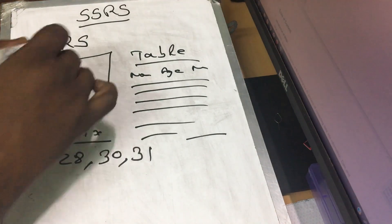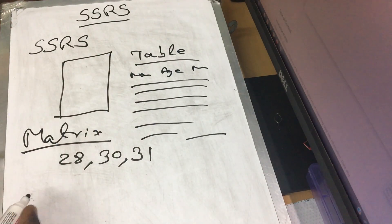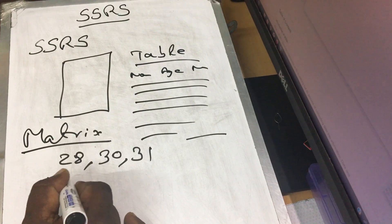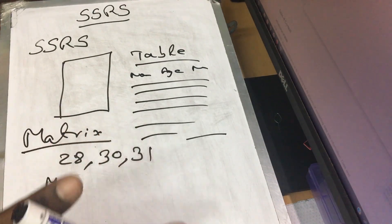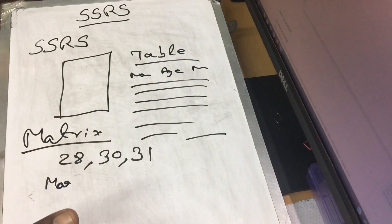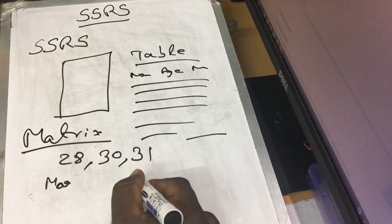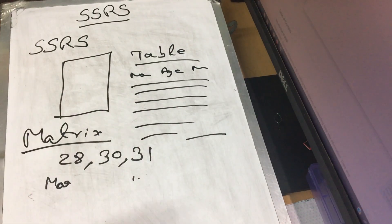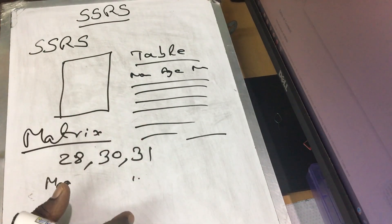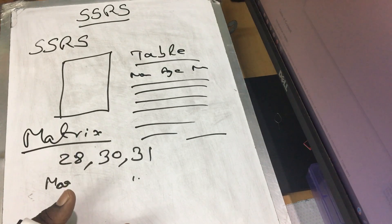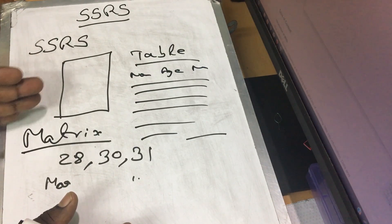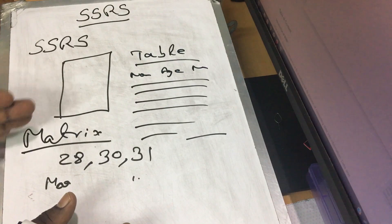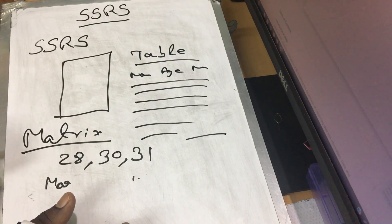If you want to look at the report, you will see the margin correctly. If you want to look at the margin of 1 inch, you go to the next page and assign the report. If you want to look at the margin, you will find the report.